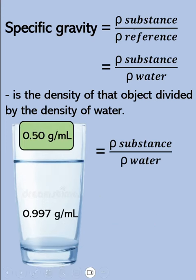How about this one? Here we have an object with a density of 0.50 grams per ml. Let's say we place this one on water. Since this one is less dense compared to the water, it will float above the water. Let's compute the specific gravity of the object.